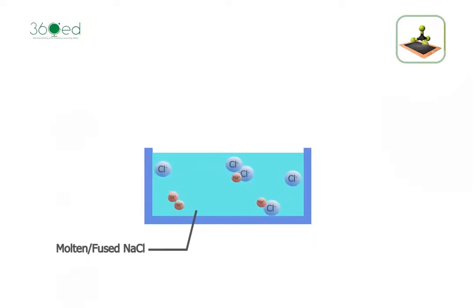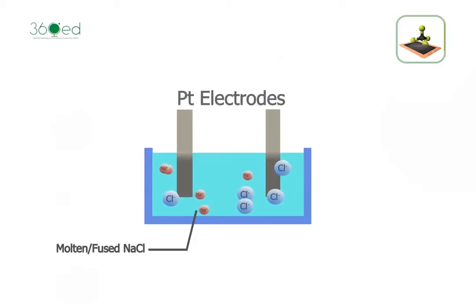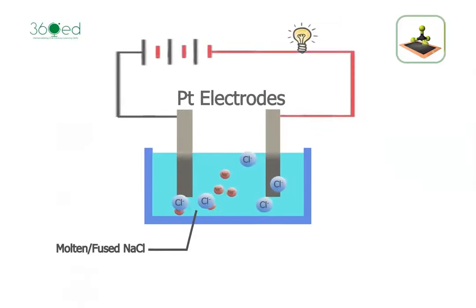In molten sodium chloride, sodium ions and chlorine ions are freely moving. Two platinum rods will be used as electrodes.